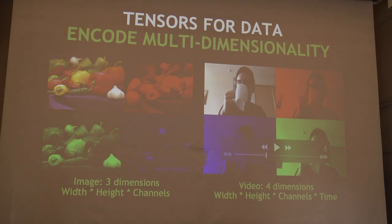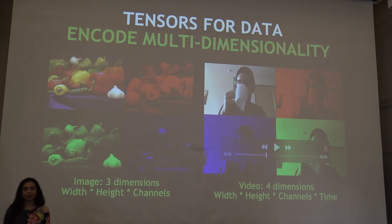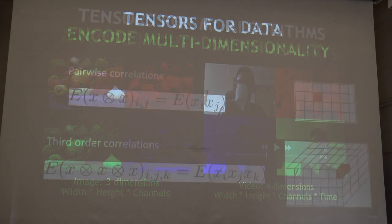It's natural to think about tensors because the data we see now is multi-dimensional. Images can be thought of as three dimensions — width, height, and channels. Add batch and you have another dimension; add video time and you have yet another. The data we find these days can be multi-dimensional and multi-modal, so it's natural to encode it as multi-dimensional arrays. Even as input to a model, we are encoding data as tensors — so this is natural because the data itself is structured as multi-dimensional.